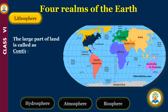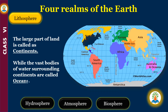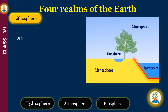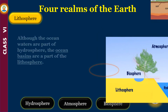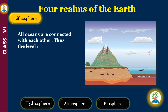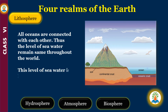The large parts of land are called continents, while the vast bodies of water surrounding continents are called oceans. Although the ocean waters are part of the hydrosphere, the ocean basins are a part of the lithosphere. All oceans are connected with each other, and the level of sea water remains the same throughout the world. This level of sea water is known as sea level.